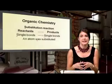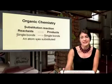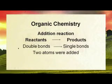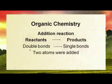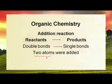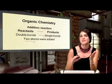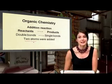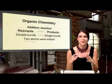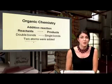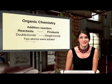For addition reactions, we start with double bonds in the reactant and end up with single bonds in the product — going from double to single bonds. Two atoms are added: the double bond breaks, one atom adds to one carbon and the second atom adds to the adjacent carbon. Sub-types include halogenation, hydrogenation, hydrohalogenation, and hydration.